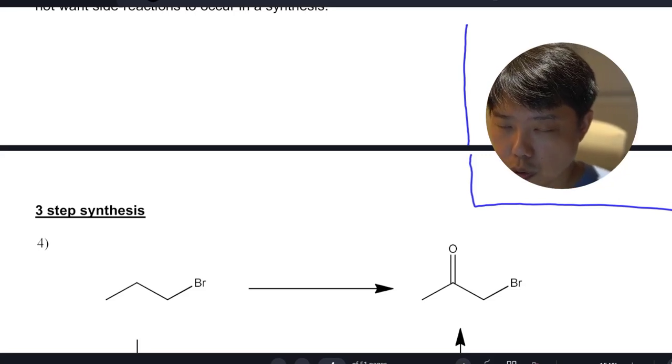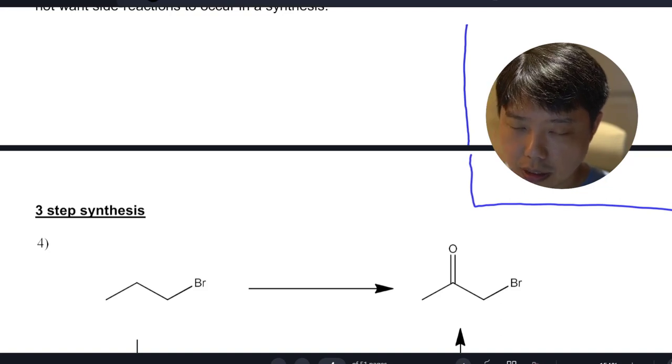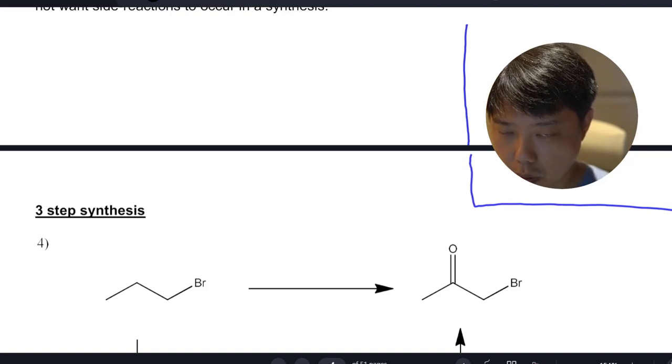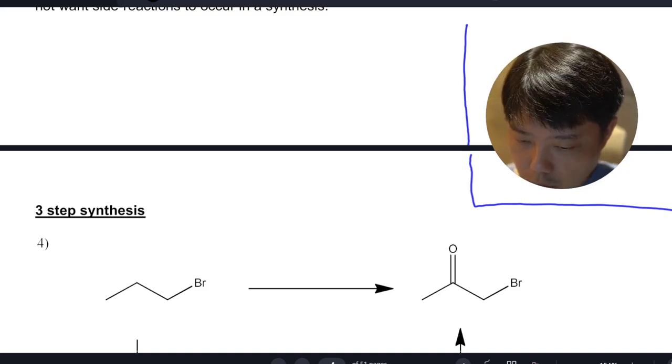I'm going to use one of the examples from my synthesis book to illustrate how the thought process actually goes when we're doing synthesis questions. Let's look at question four. We have this molecule that has three carbons and we're going to get to this target molecule which also has three carbons.